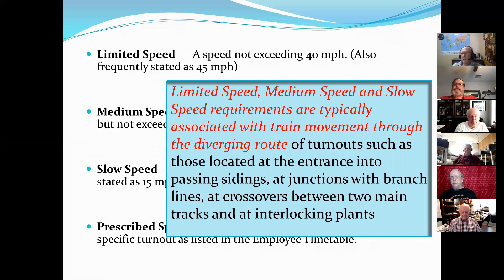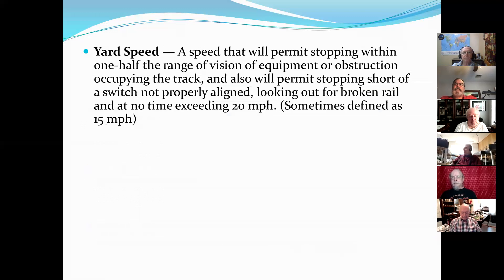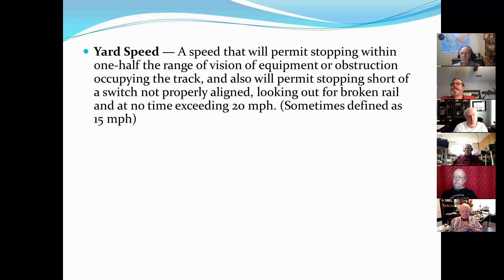That's maximum speed — the high signal. It's also used when two main lines cross each other or when a main line is passing into an interlocking plant. Yard speed is a speed that will permit stopping within one half of the range of vision of equipment or obstruction occupying the track, and also permit stopping short of a switch not properly aligned, looking out for broken rail, and at no time exceeding 20 miles per hour. It's a long statement, but pretty clear.